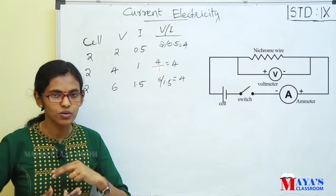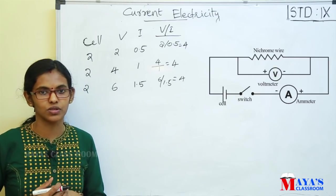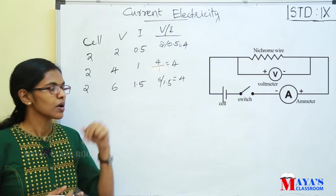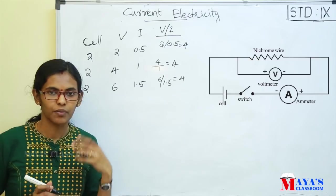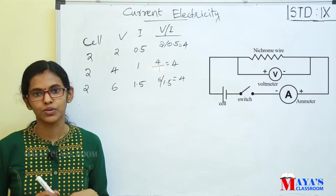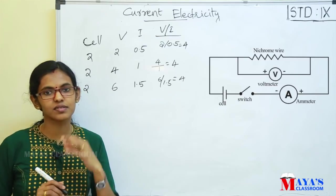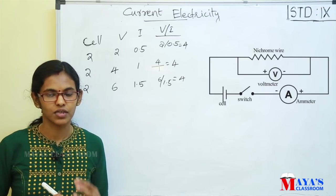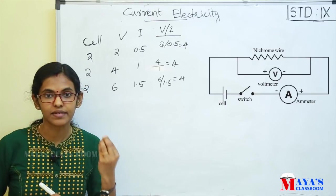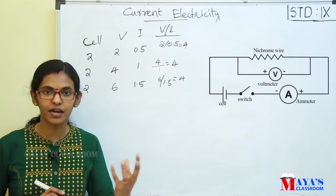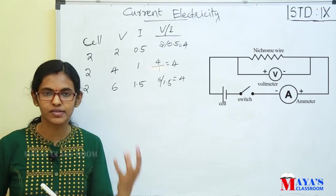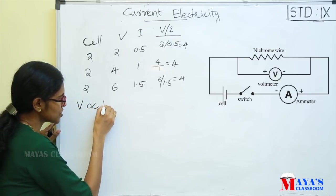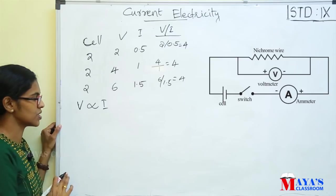So if the voltage is proportional to the current, and the current is proportional to the voltage, then the voltage is directly proportional to current. That is, V is directly proportional to I.